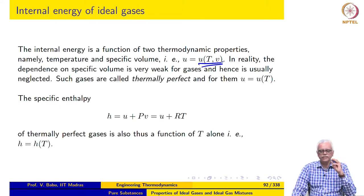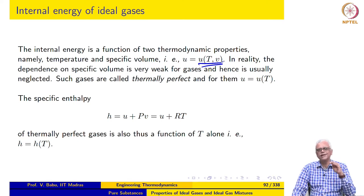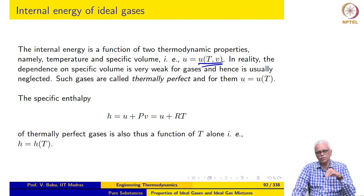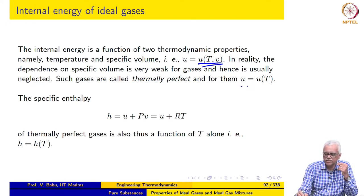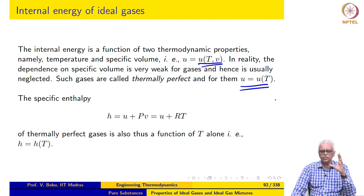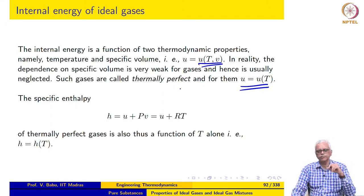In reality, the dependence of internal energy on specific volume is very weak for gases, so we can generally neglect this. When we move on to two-phase mixtures, we will see that the dependence of specific internal energy on specific volume is quite significant and will be accounted for. But for gases the dependence is very weak, so we can say that specific internal energy is just a function of temperature alone. Such gases are called thermally perfect gases.